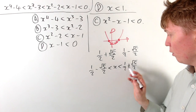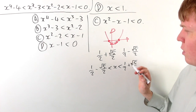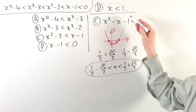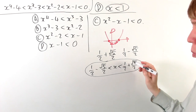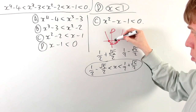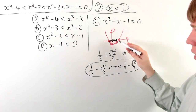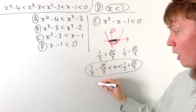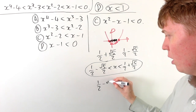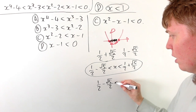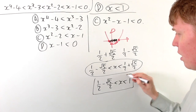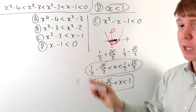We know that one half plus root 5 over 2 is bigger than 1, so we also need x to be less than 1. On our picture, 1 sits within that interval, so we're only interested in x values between 1 and one half minus root 5 over 2. Combining C and D, we get: one half minus root 5 over 2 is less than x, and x is less than 1.